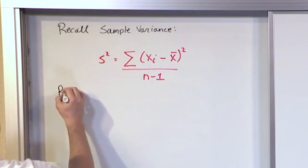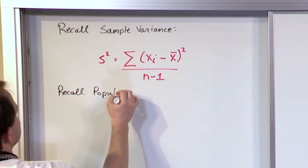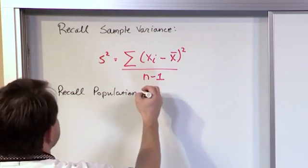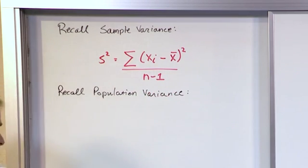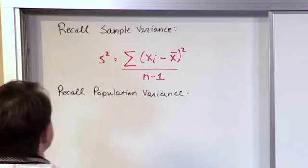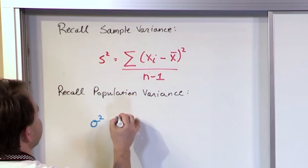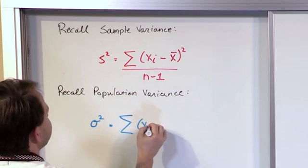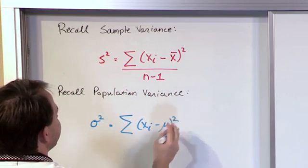Now recall also the population variance. There's a reason I'm writing all this down again, so just bear with me. The population variance, I'll go ahead and rewrite that again. We called it sigma squared, and it was the sum of all of the data points minus the population mean. Everything squared, just like before.